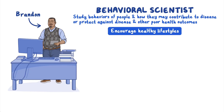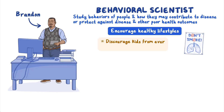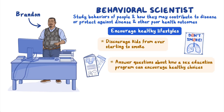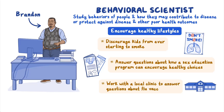Brandon works with statisticians to understand the factors that put members of his community at risk and collaborates with other public health experts to design tailored strategies to improve health outcomes. For example, because smokers are more likely to develop lung cancer, and 9 out of 10 adults who smoke cigarettes daily first try smoking by age 18, Brandon might work with local schools to develop campaigns to discourage kids from starting to smoke. He might also help answer questions about how a sex education program can provide students with knowledge and skills to make healthy choices and avoid HIV, STDs, and unintended pregnancy.